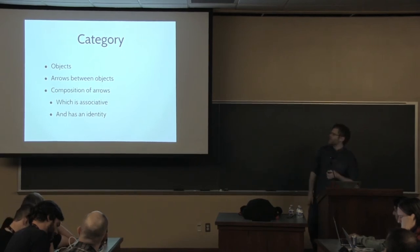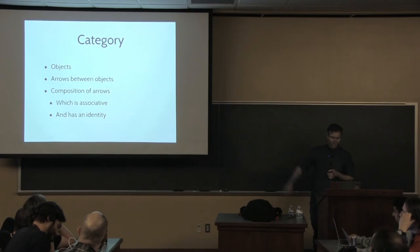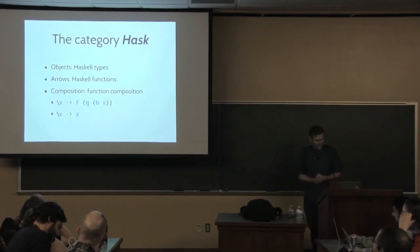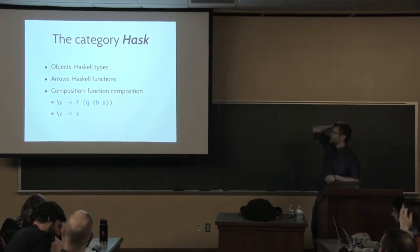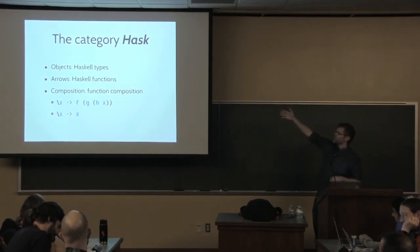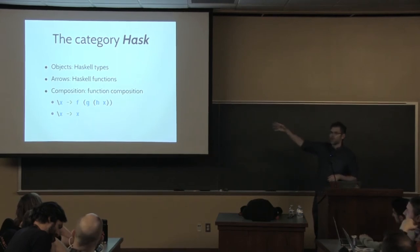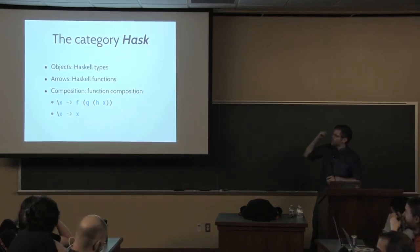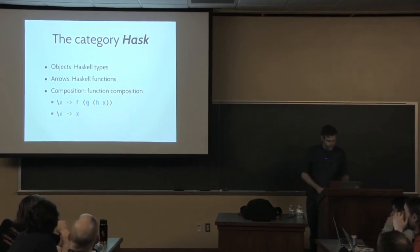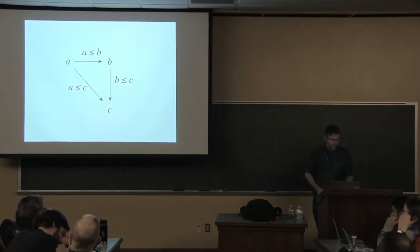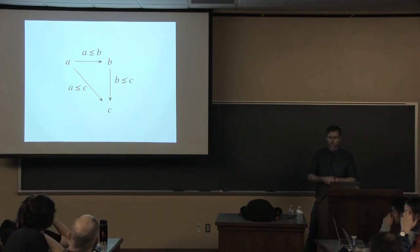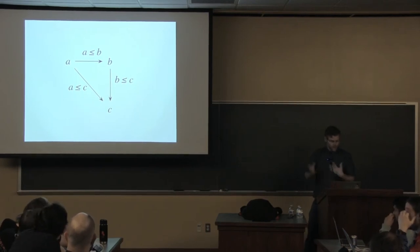In general, a category is given by some objects, some arrows between those objects, and a composition of those arrows that is associative and has an identity. That's it. The category Hask of Haskell types and functions has Haskell types as objects, Haskell functions as arrows, and function composition as composition. It is associative and has the identity function lambda x, x. But not all categories have functions or function-like things as arrows.